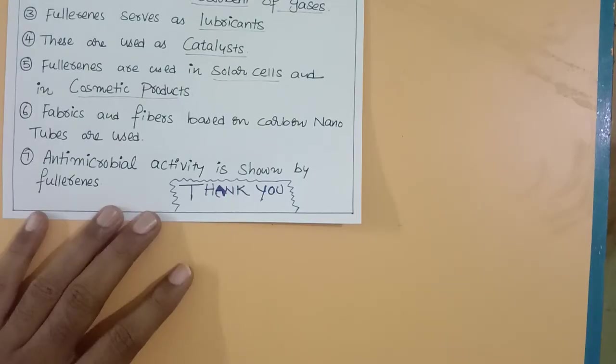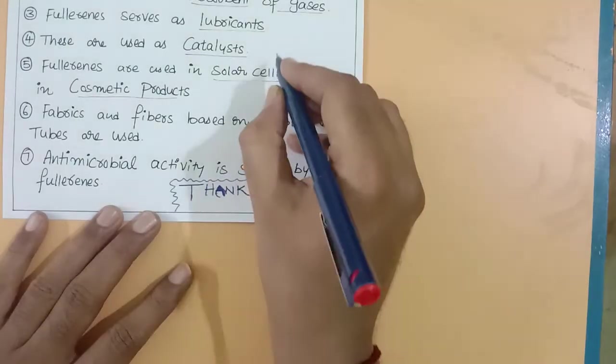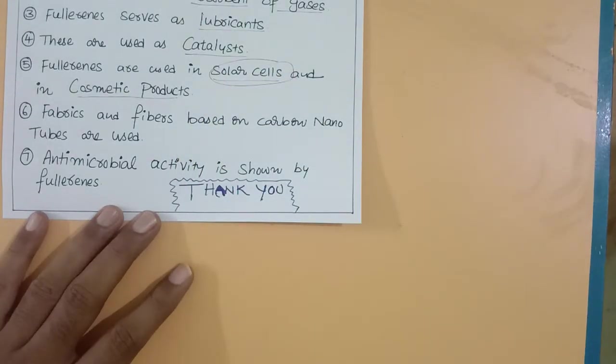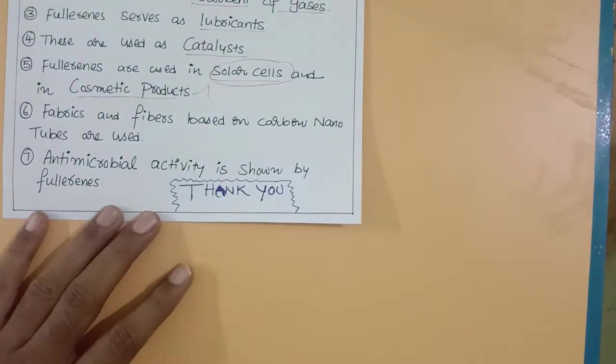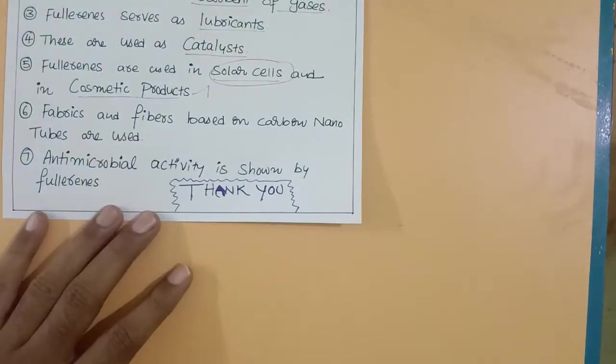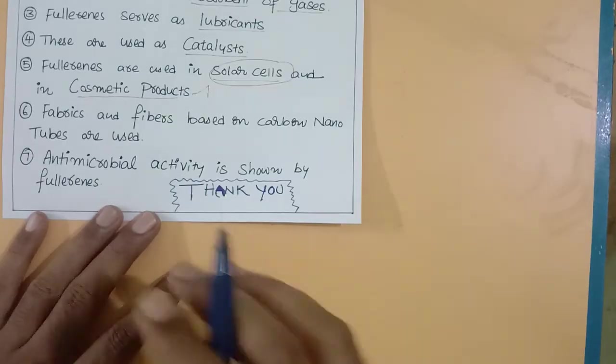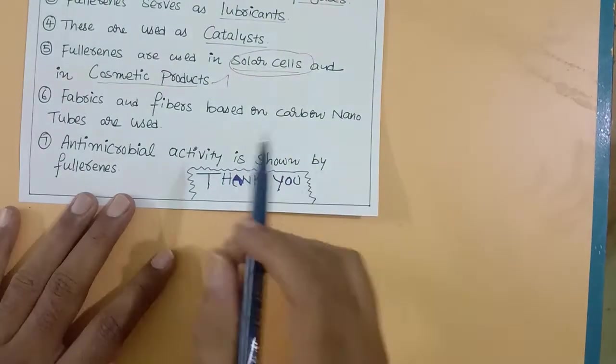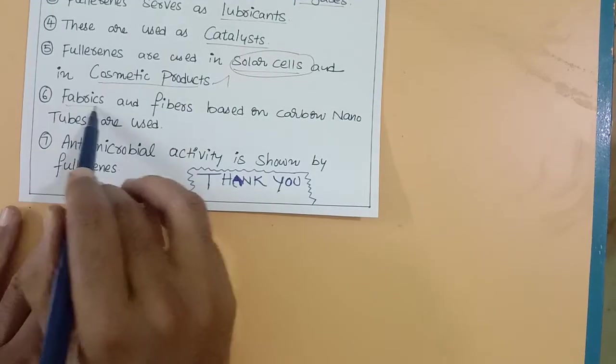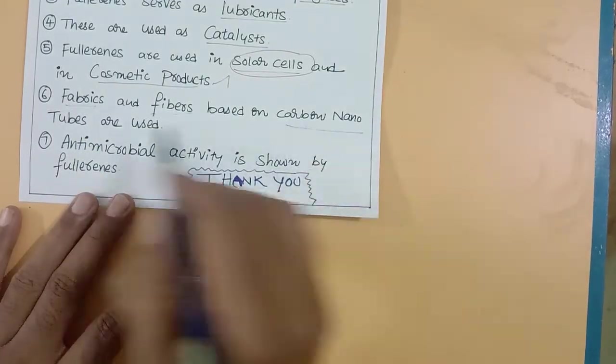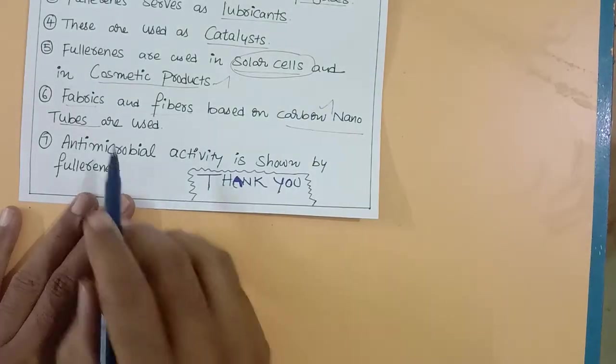Fullerenes are used in solar cells and cosmetic products. In solar cells, fullerenes absorb sunlight and emit electrons for harvesting electricity. In cosmetic beauty products, fullerenes absorb waste from skin and increase beautification. Fullerenes are also used in fabrics and fibers.